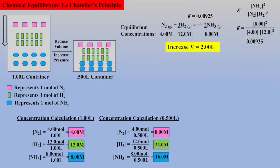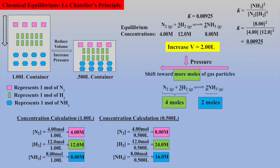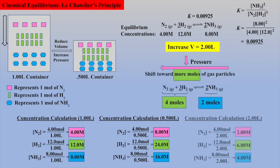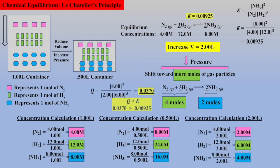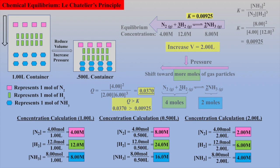One can also imagine the converse: if the volume is doubled to 2 liters — which we can think of as a reduction in pressure — the equilibrium will shift to the left, toward the side with more moles of gas. Calculating the new concentrations followed by a Q calculation, where Q is greater than K, we prove that the equilibrium must shift to the left, as Le Chatelier's principle predicts.